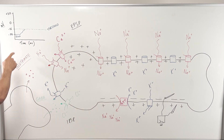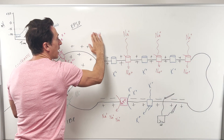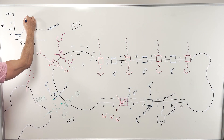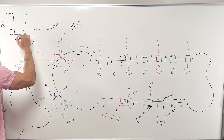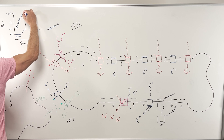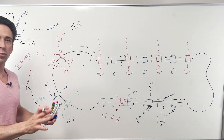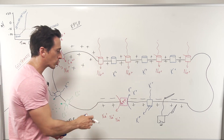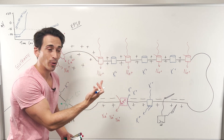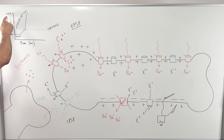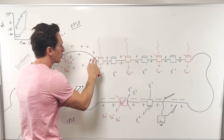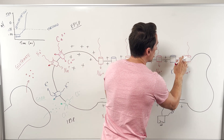So much sodium has moved inside the neuron that it's gone from negative 55 all the way up to positive 30. This process of going from negative 70 up to positive 30 is called depolarization. When the neuron began, it was negative inside and positive outside — that's called polarized. We've changed that, so it's depolarized. Positive 30 is now the key to close those voltage-gated sodium channels — they shut off.